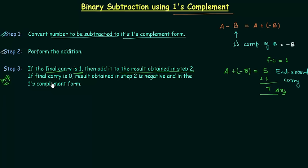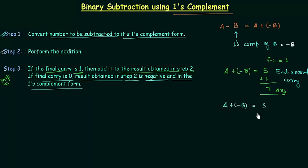And if the final carry is equal to zero, the result obtained in step number two is negative and in one's complement form. So if you add a and minus b and the final carry is zero, then the sum is negative and in one's complement form, so we have to invert it to get the answer. This will be more clear when we solve an example.